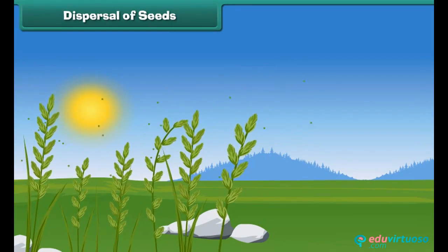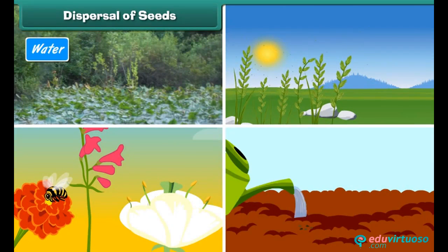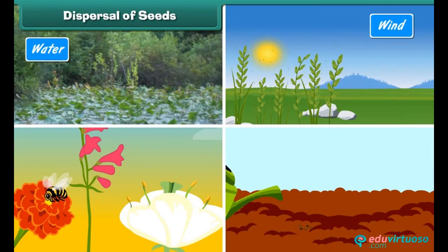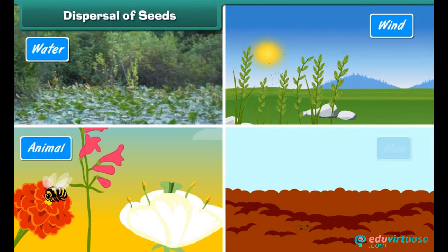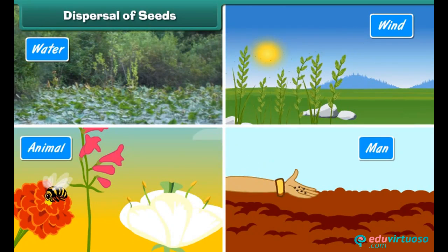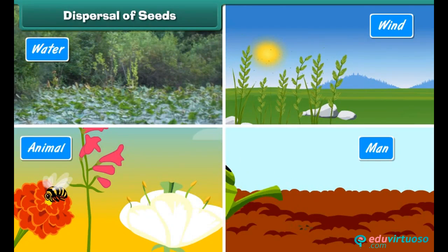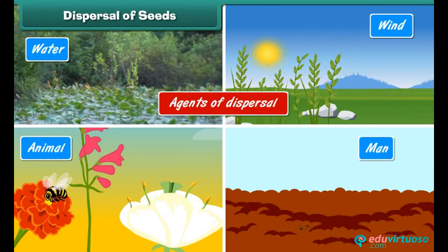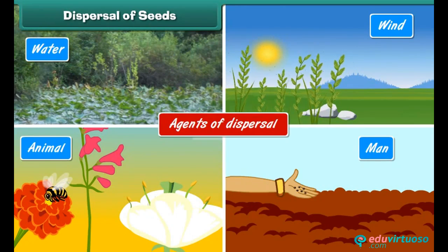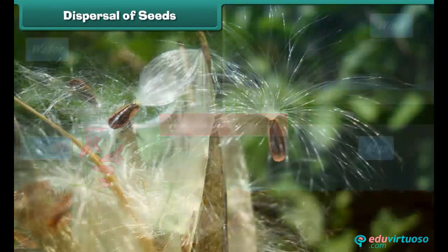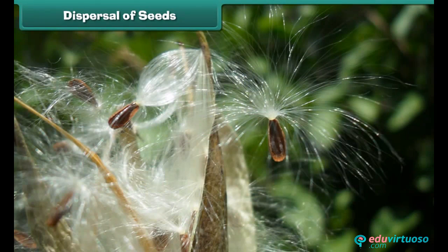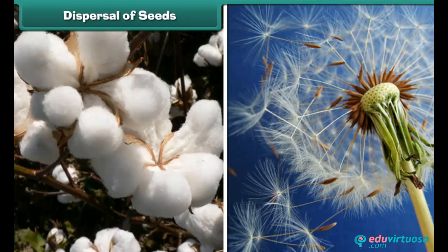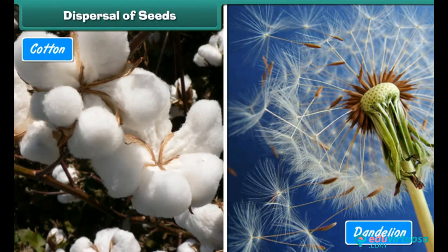Nature has arranged some methods of seed dispersal in many ways, like by water, wind, animals, and even man — these are known as agents of dispersal. Seeds which are light in weight and have wings or feathers are dispersed by wind. Examples: cotton, dandelion, maple.